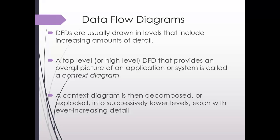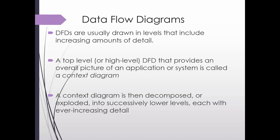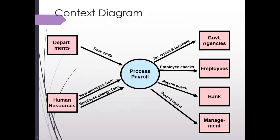In this video we are going to show data flow diagrams and talk about the differences between a context diagram, a level zero, and a level one. Data flow diagrams usually start at a very high level and then increase in detail. The highest level is called a context diagram, then we start drilling down into more detail with each of the lower levels until we get to the appropriate level needed for documentation. For purposes of this class we're going to stop at a level one.